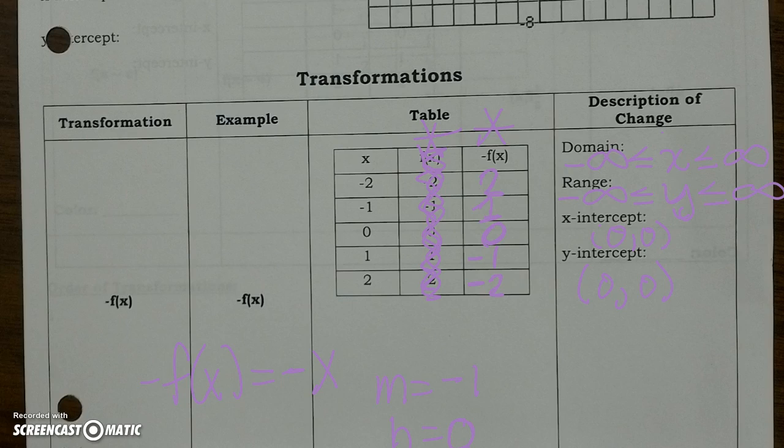Make sure that when you do the next transformations, you pay attention to what the transformation is — write down if it is a reflection, a horizontal shift, or a vertical shift. Then give me what your new equation is going to look like. You're manipulating your parent function to figure out what happens on your graph. Your graph at the top of your paper should have all these different colors, so you can see what exactly is happening to your linear function whenever you manipulate it. And that's about it — thank you for listening.